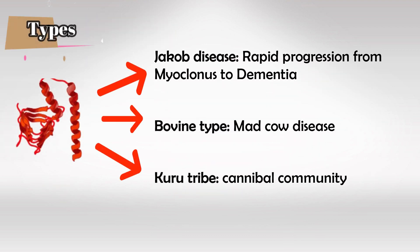We have three main types of prion disease. They all have the exact same pathophysiology and the only thing that differs is the source of the prion protein. In Creutzfeldt-Jakob disease, it presents with myoclonus progressing to dementia. In the bovine type, the source is cow's brains. And the Kuru type is due to cannibalism.